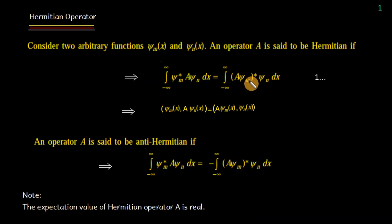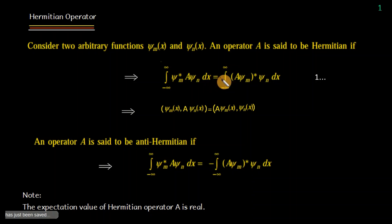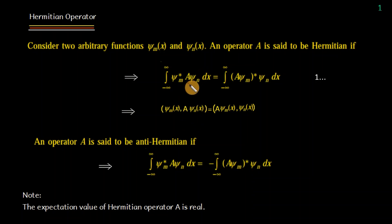Phir hum operator A ko psi_m par operate karein ge, uska whole conjugate lein ge, aur psi_n se multiply kar ke integrate karein ge with respect to x or dr. Agar koi operator is integral equation ko satisfy kare to aise operator ko hum Hermitian operator kehte hain. This scalar product can be written as ⟨psi_m | A | psi_n⟩ = ⟨A psi_m | psi_n⟩.